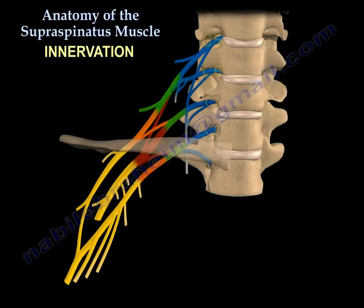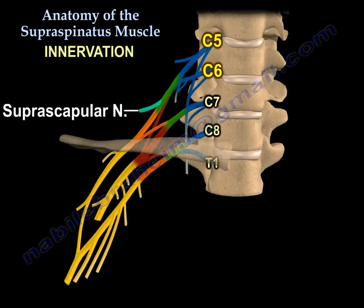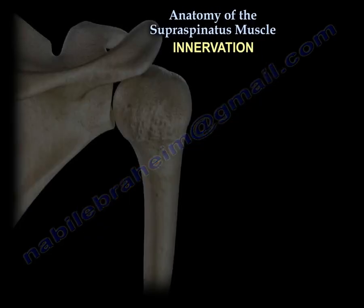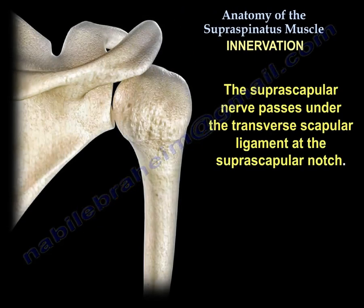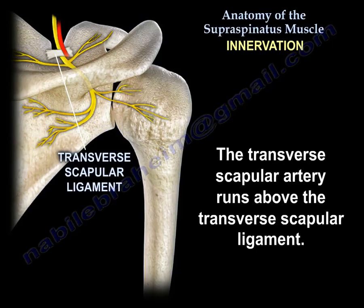Nerve supply: C5-C6, suprascapular nerve. This is the only branch from the upper trunk. The nerve passes through the suprascapular notch. The superior transverse scapular ligament covers the notch — the nerve is deep to the ligament, while the artery is above the ligament.